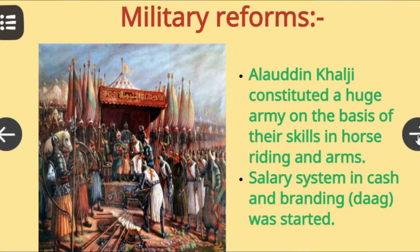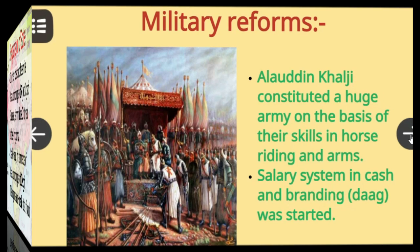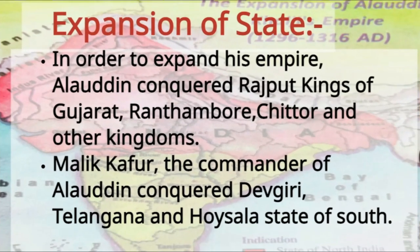Alauddin Khilji constituted a huge army on the basis of skills in horse riding and arms. He started a salary system in cash, and branding of horses was also introduced.